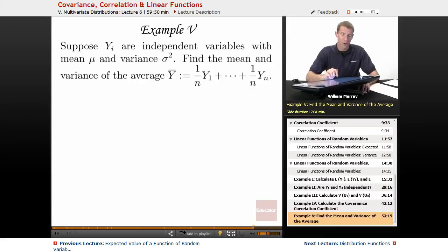In our last example here, we've got independent variables, but they all have the same mean and the same variance. We want to find the mean and the variance of the average of those variables. So the average just means you add them up and divide by the number of variables you have. So it's 1 over n, y1, up to 1 over n, yn.